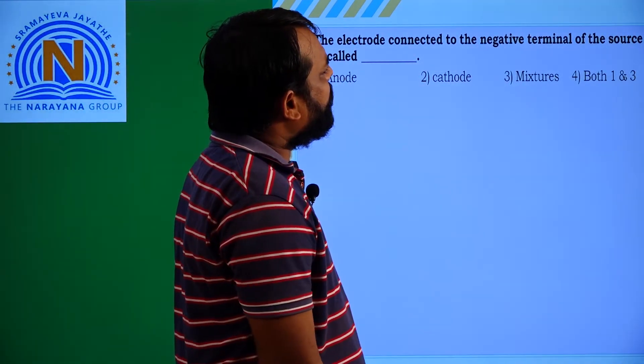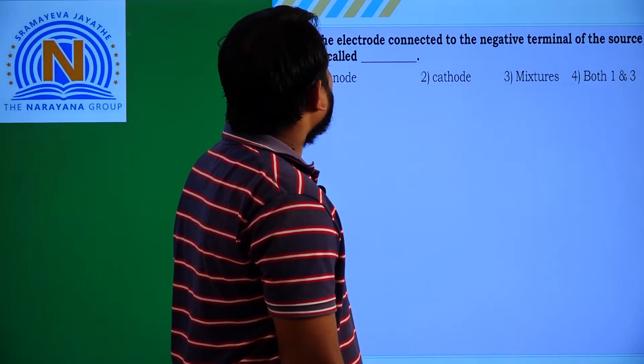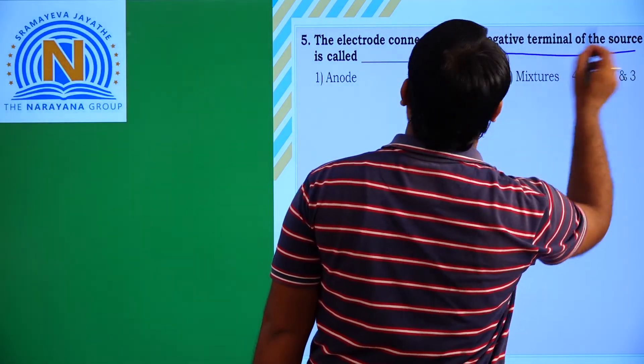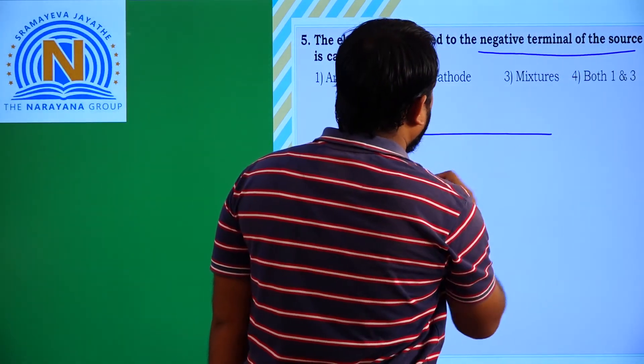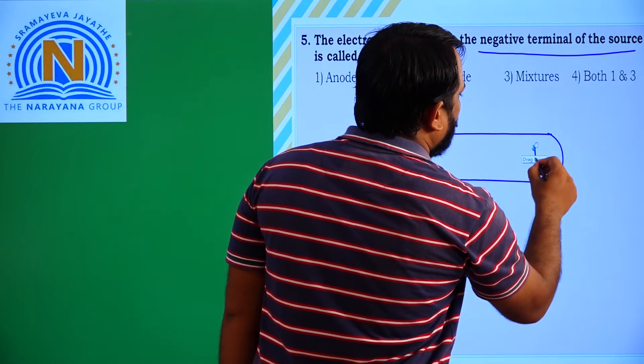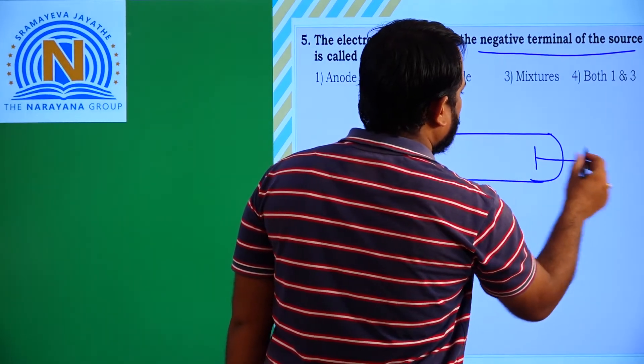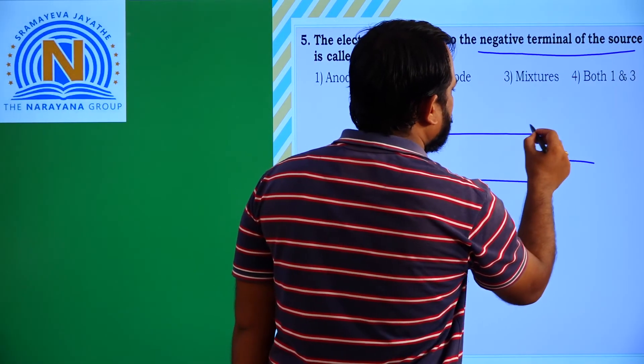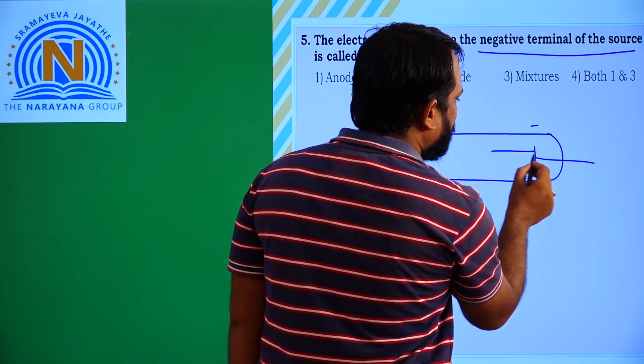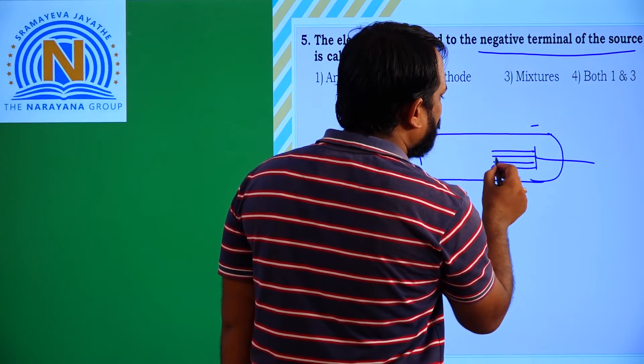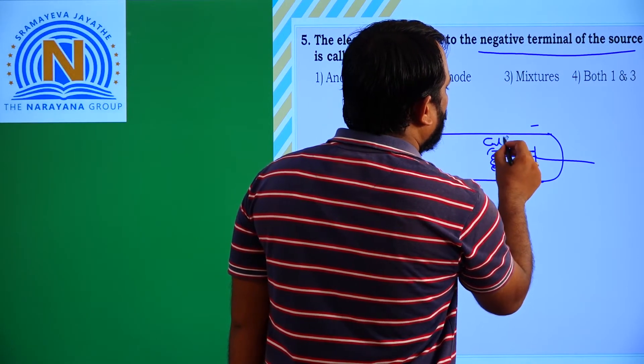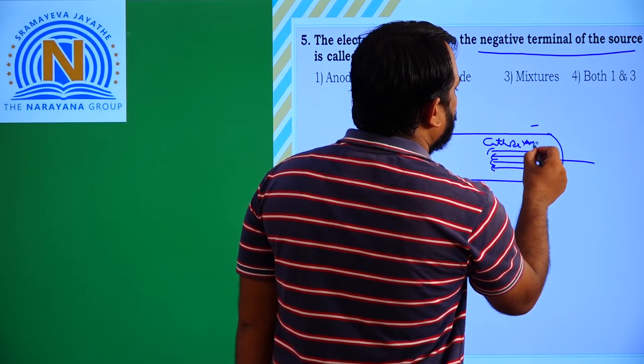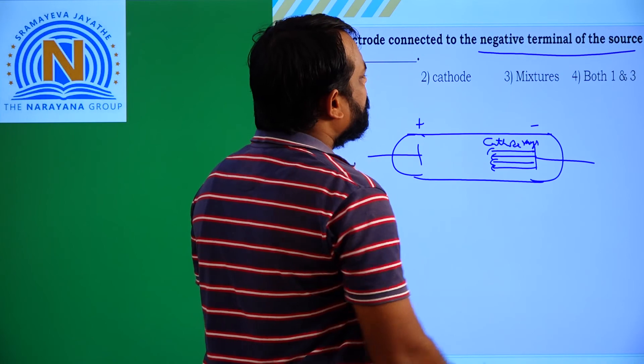The electrode connected to the negative terminal of the source is called - the electrode connected to negative terminal of the source. Suppose this is a positive terminal and this is negative terminal. That means the rays which are coming from this negative source are generally called as cathode rays. Here what is the option? Second option.